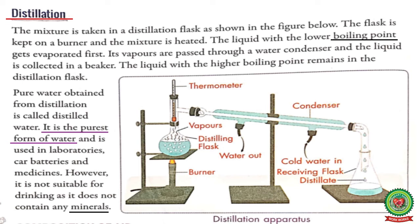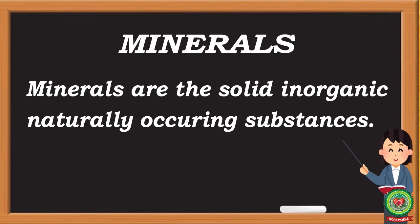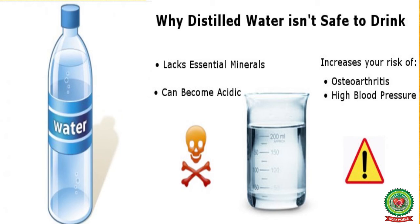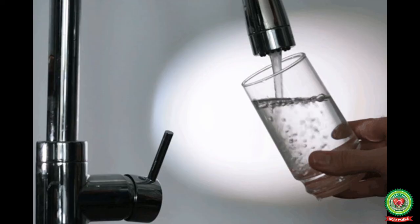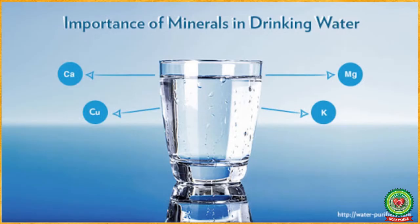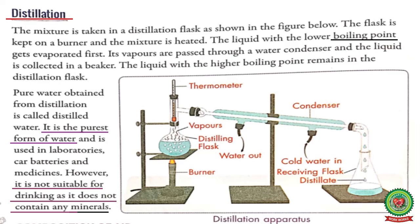Now underline the word 'minerals' and write its meaning: minerals are solid, inorganic, naturally occurring substances. Distilled water does not contain any essential minerals, but the tap water that we use contains minerals like calcium, magnesium, and potassium, which are essential for us. That is why distilled water is not suitable for drinking.